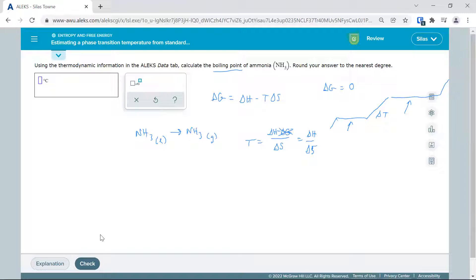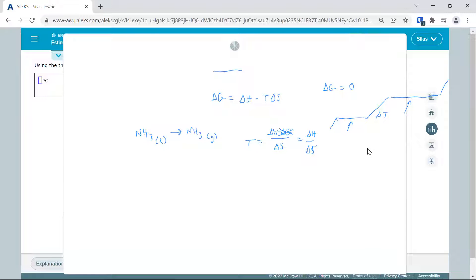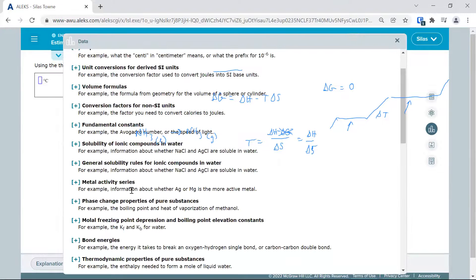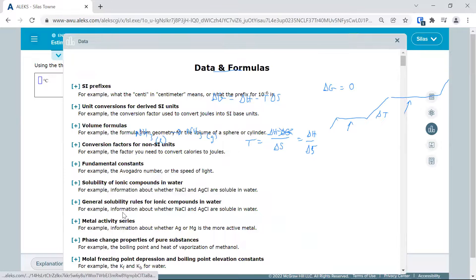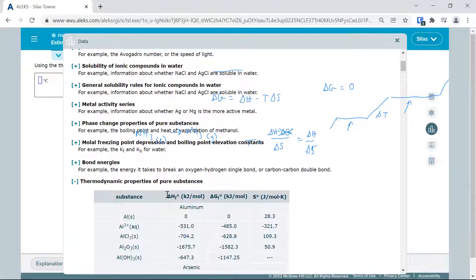So where do those values come from? We're looking for ammonia. We're going to open our data tab here. You're going to see thermodynamic properties of pure substances. So we're going to open that, and we're going to see a couple things here. We're going to use delta H and we're going to use delta S.